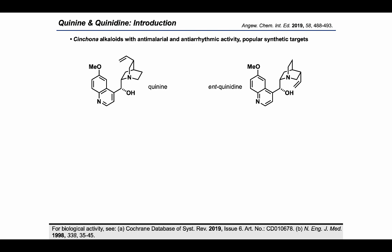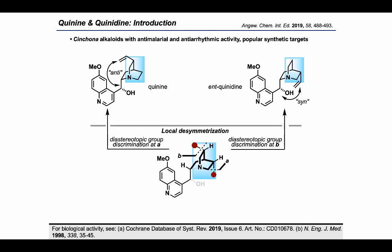Specifically, we can see that in quinine the methoxyquinoline ring is anti to the vinyl group, whereas in ent-quinidine the methoxyquinoline ring is syn to the vinyl group. If we try to imagine a route that could lead to both of these targets, we can envision that having a locally symmetric precursor bearing diastereotopic groups might allow various local desymmetrization processes by diastereoselectively removing one of the groups marked in red. This is the key idea of the synthesis.